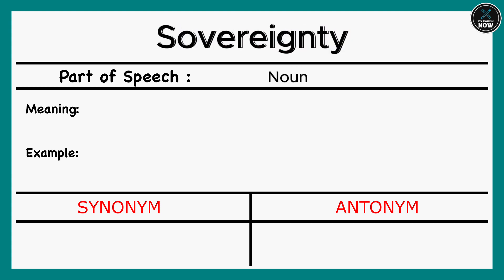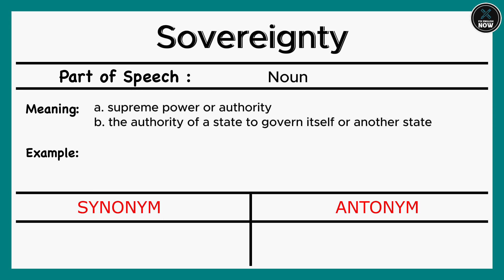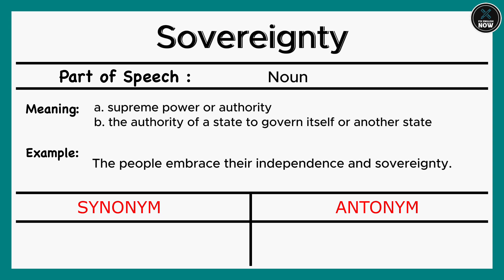Sovereignty: A. Supreme power or authority. B. The authority of a state to govern itself or another state. Example: The people embrace their independence and sovereignty. Synonyms: Freedom, Democracy. Antonyms: Retention, Belief.